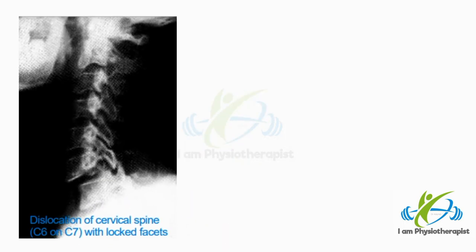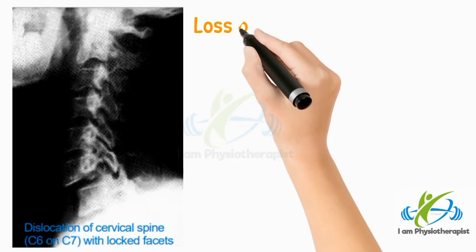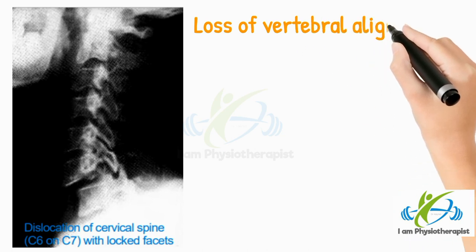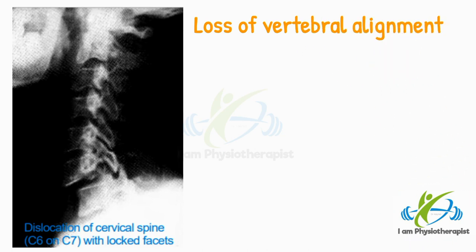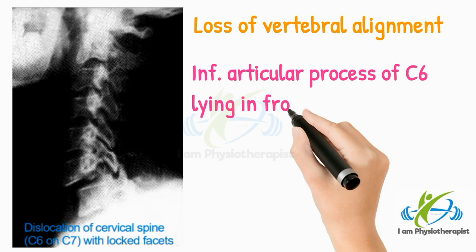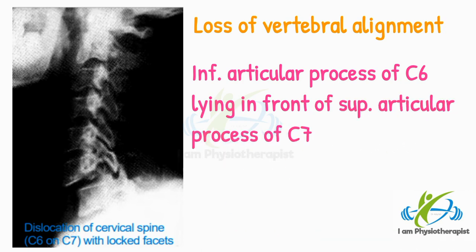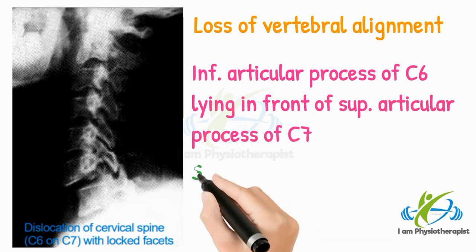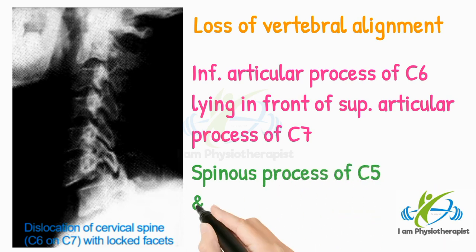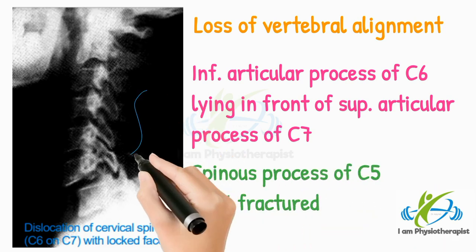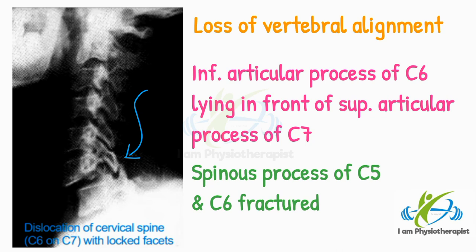This X-ray shows marked loss of vertebral alignment, and the inferior articular processes of C6 are lying in front of the superior articular processes of C7. The spinous processes of C5 and C6 are fractured. Diagnosis is dislocation of C6 on C7 with locked facets.